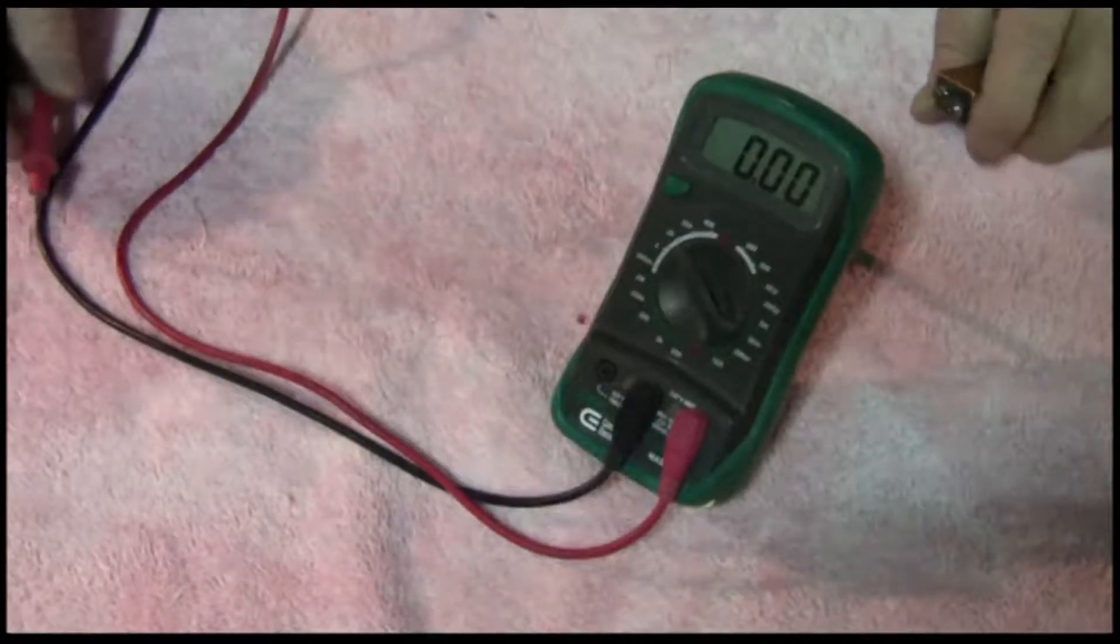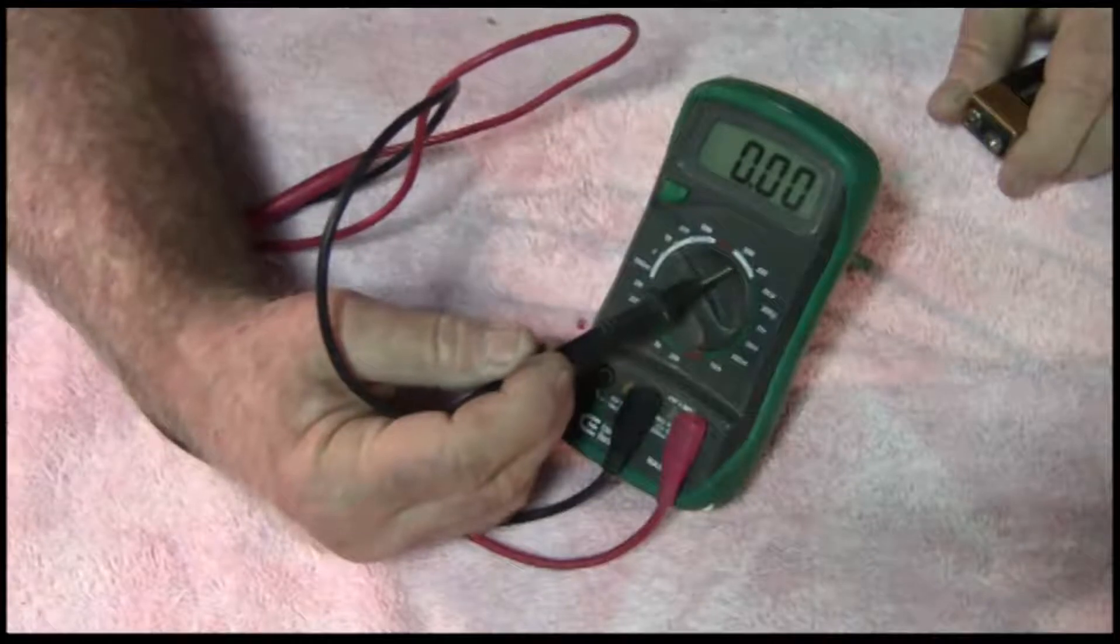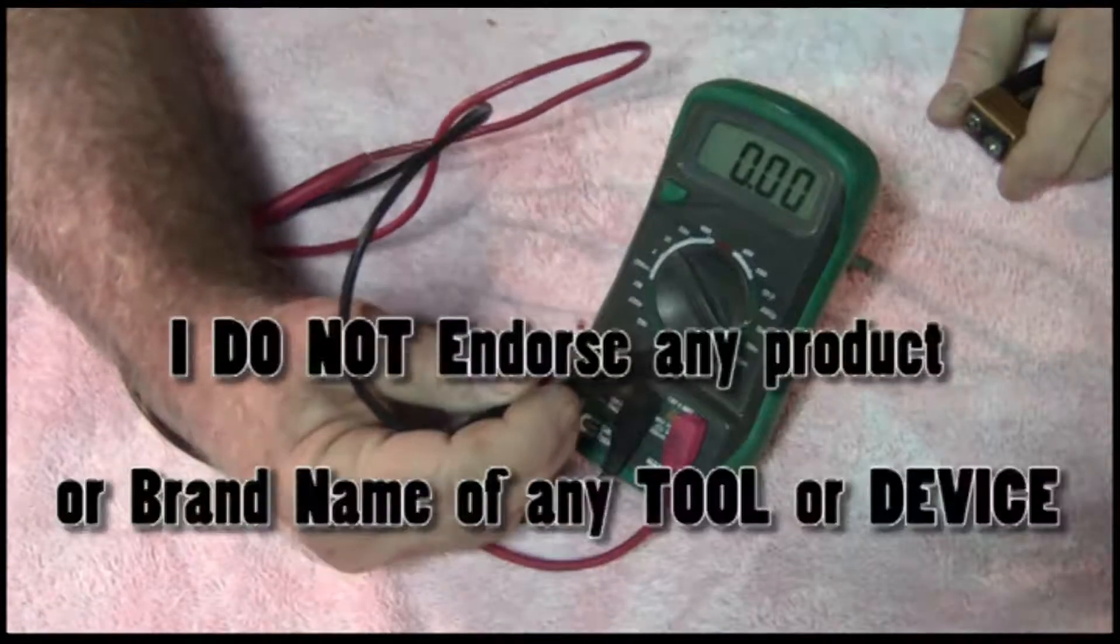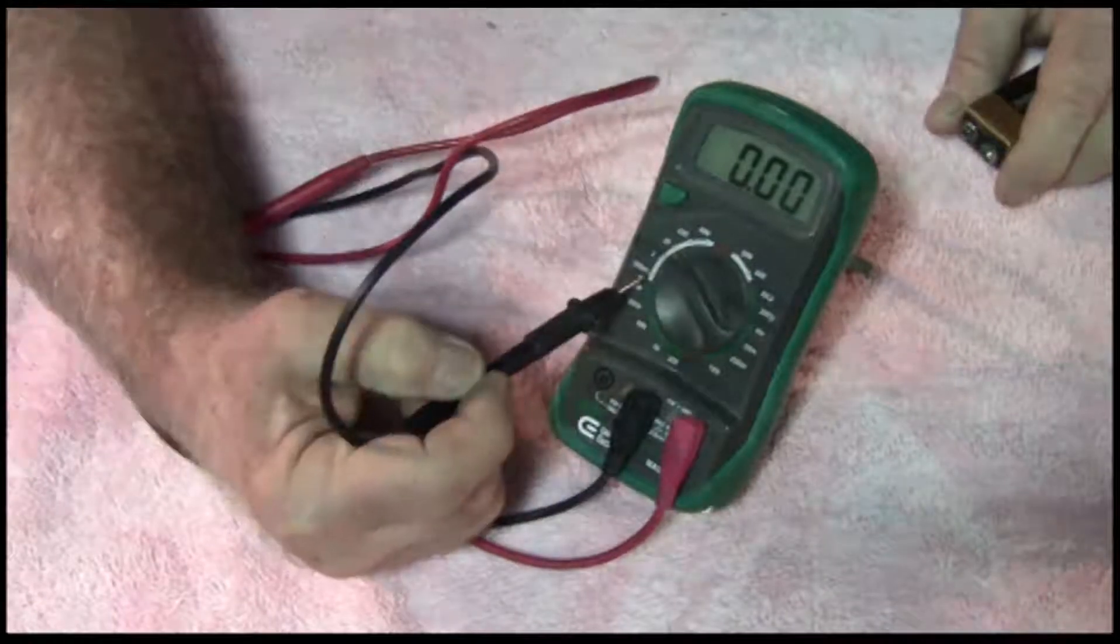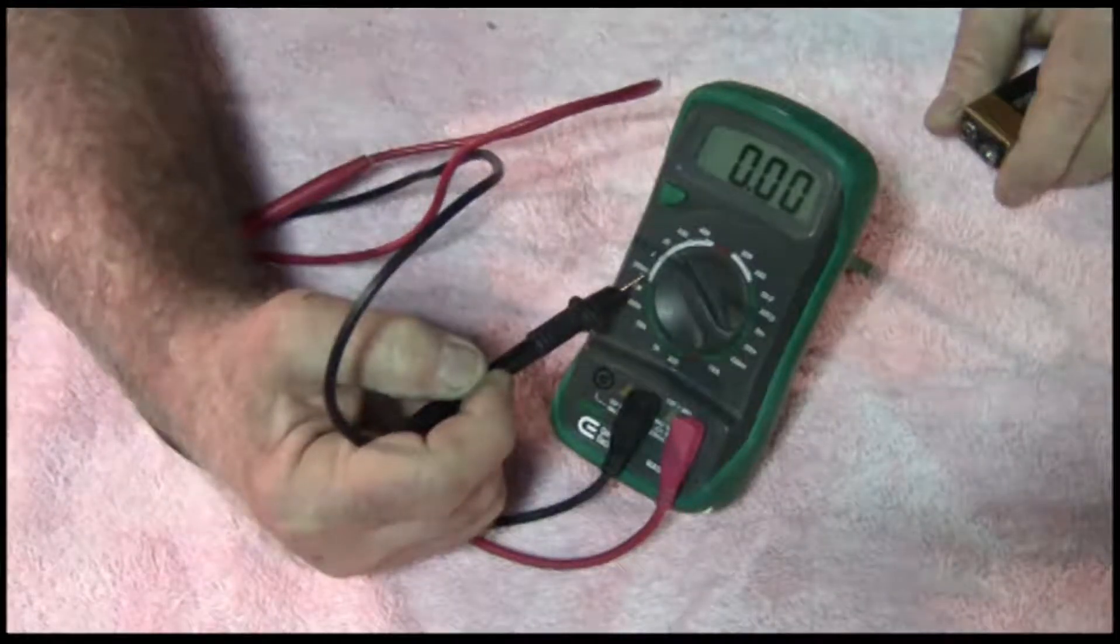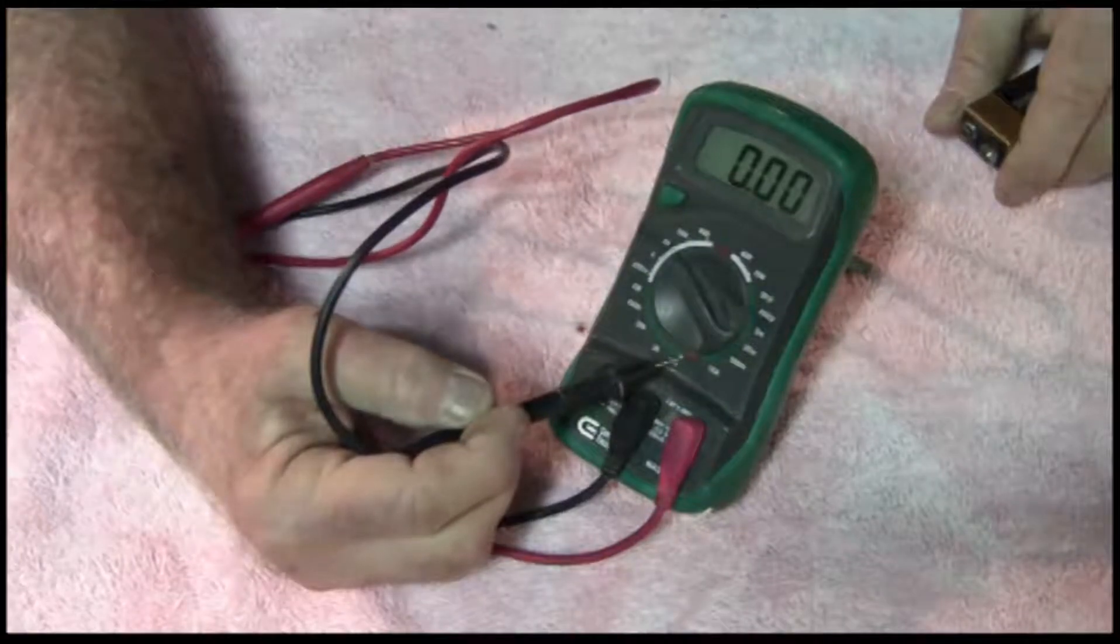Next in line is the multimeter. It tests alternating current from 600 volts down to 2 milliamps and from 600 volts down to 200 milliamps direct current. It also tests ohms and continuity.